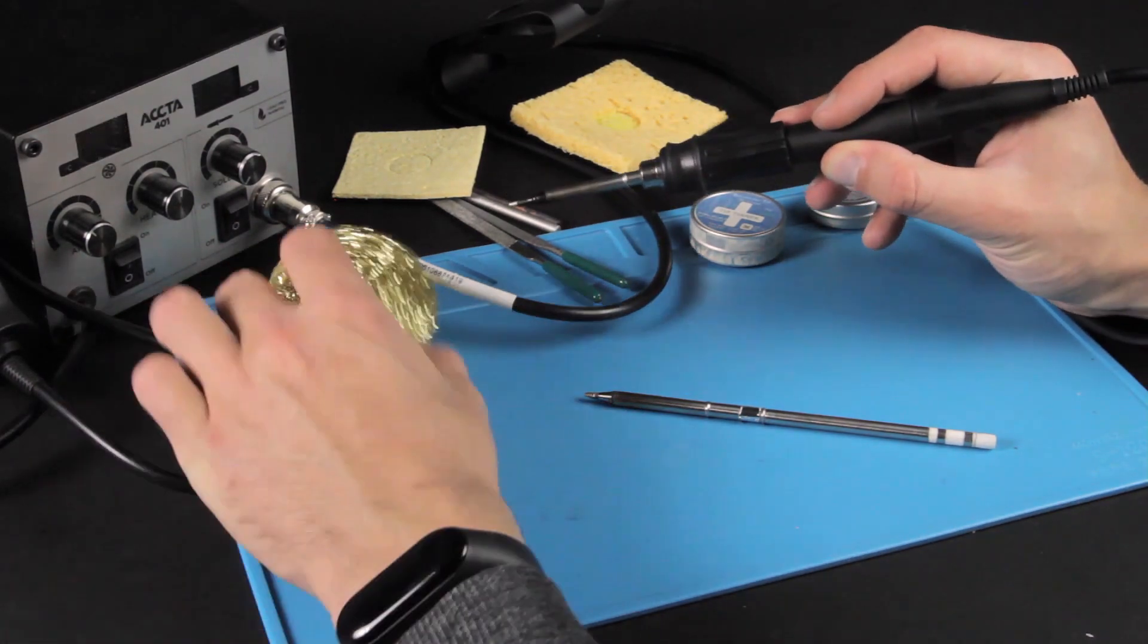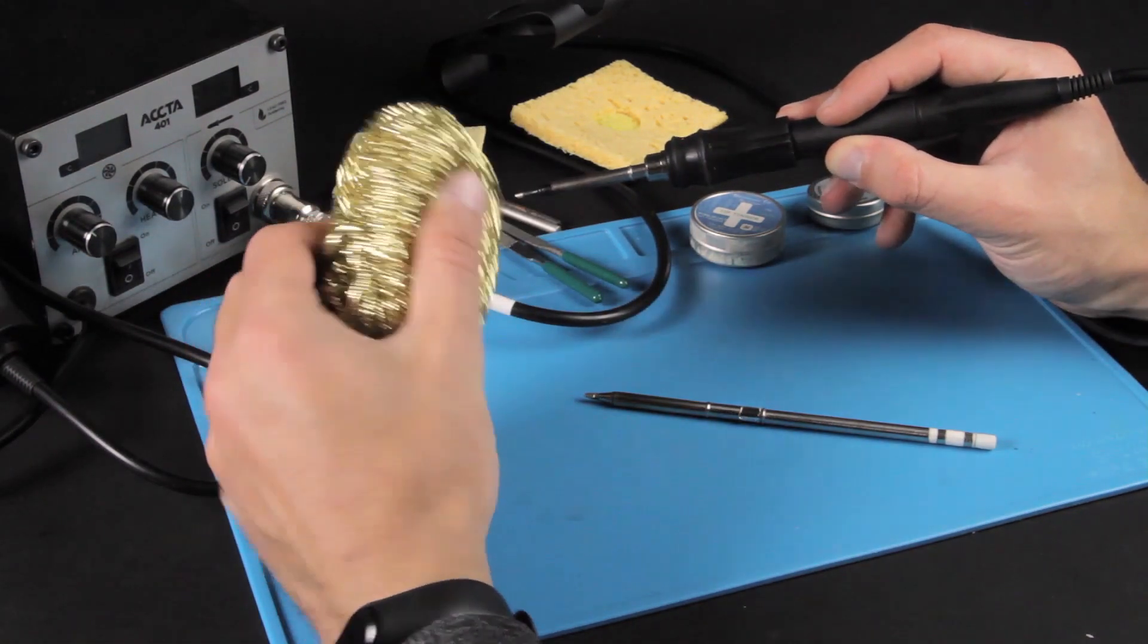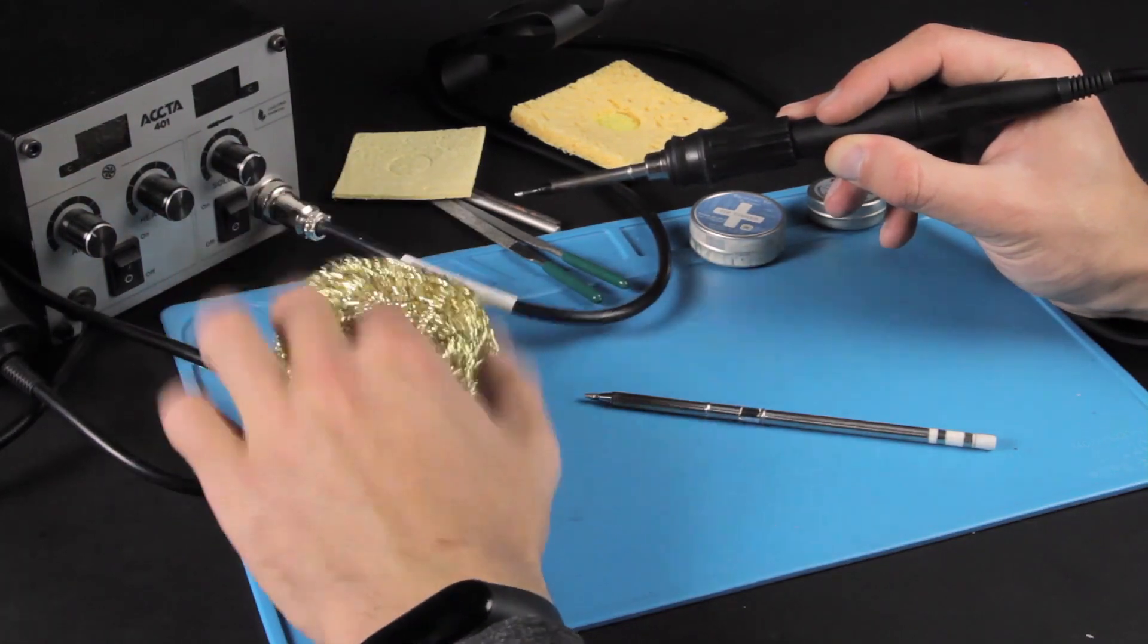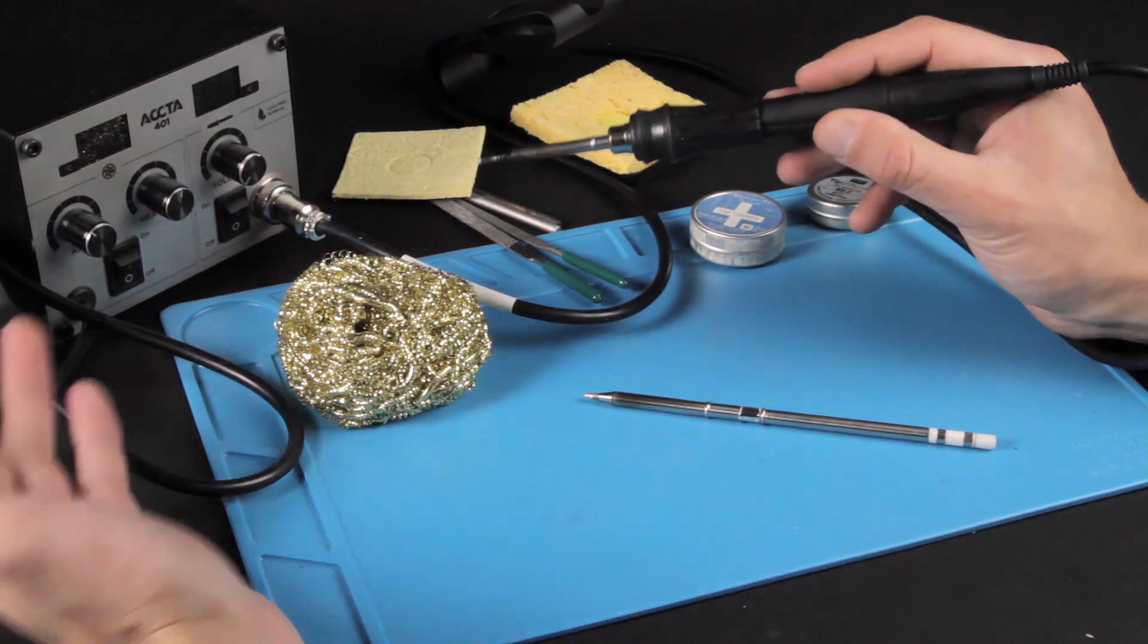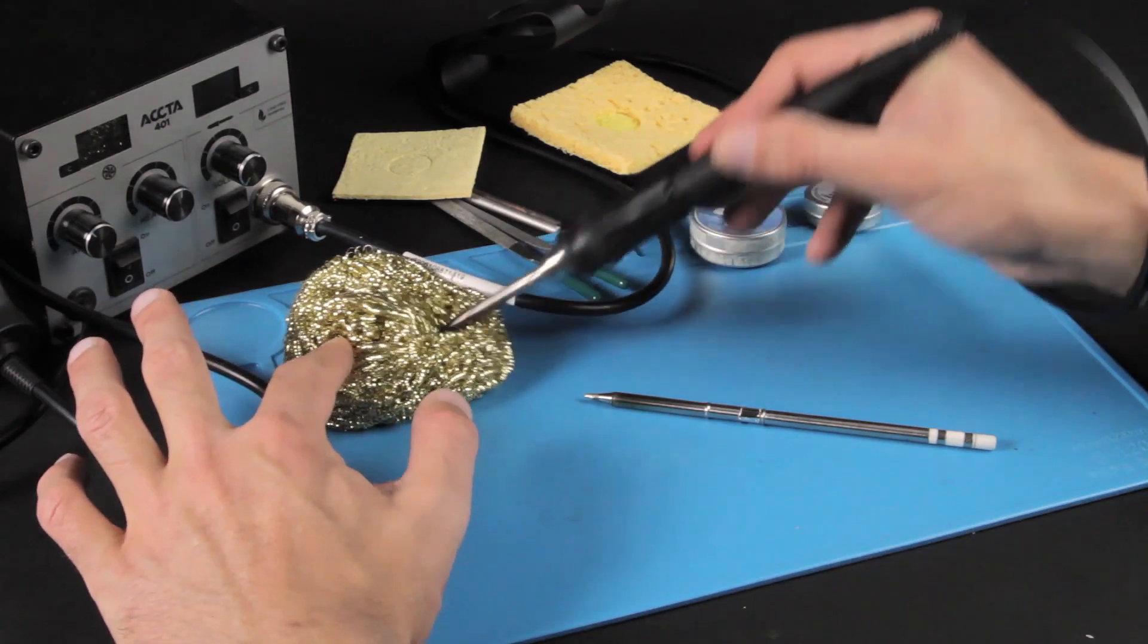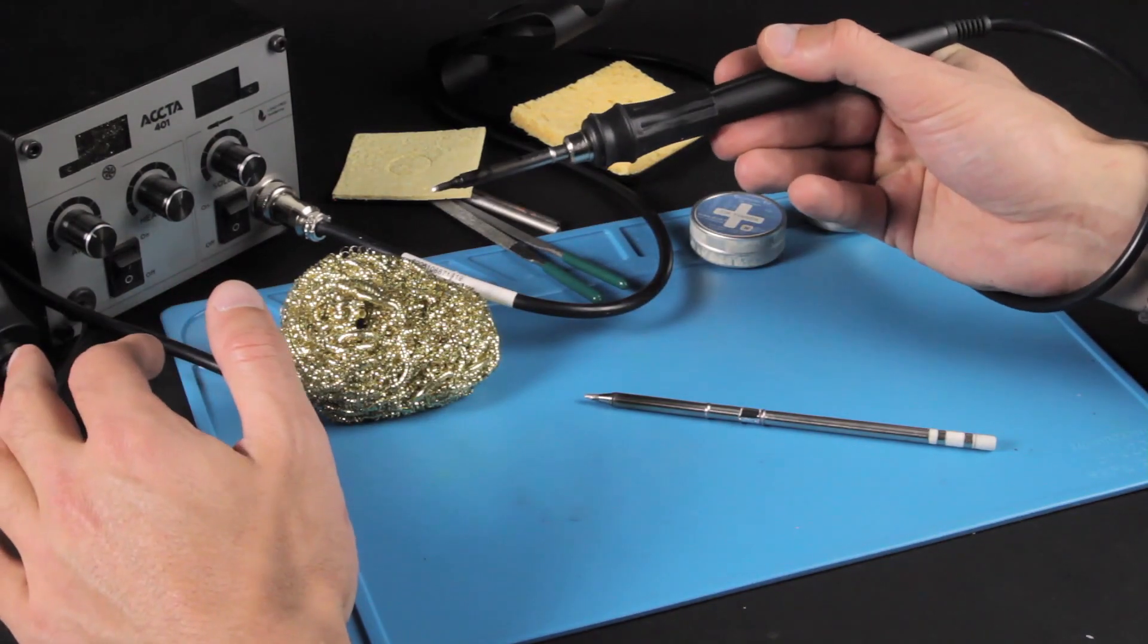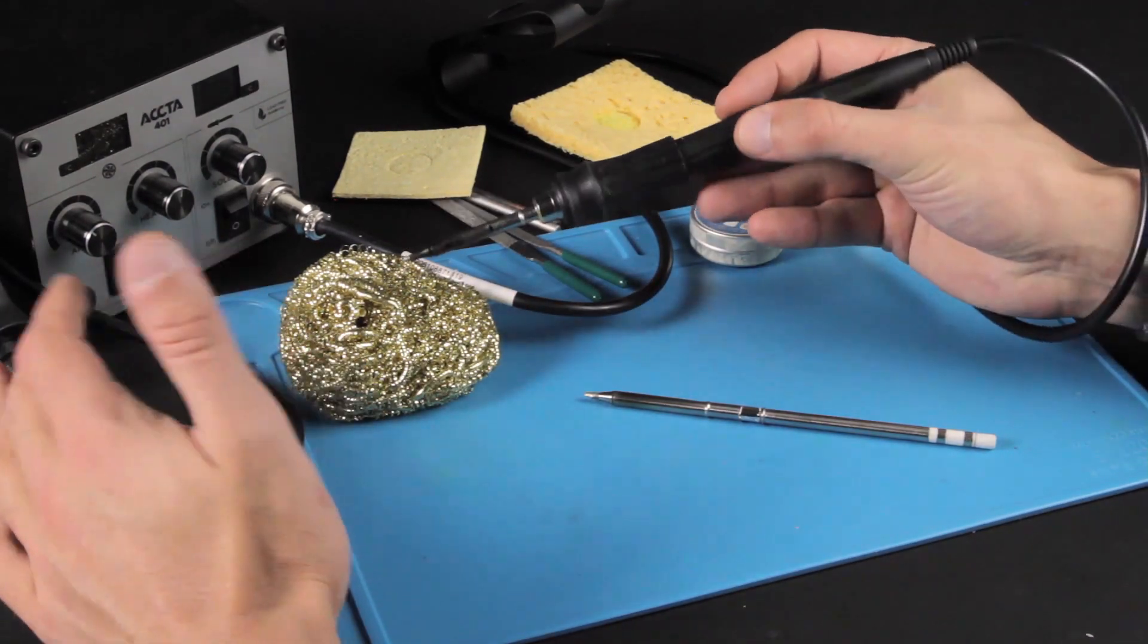There's one more better way to clean the tip using special brass wool. This way cleans the tip even more effectively and does not affect the soldering tip temperature. Just stick the tip in the brass wool and it does the job.